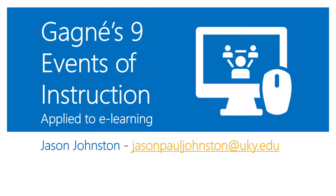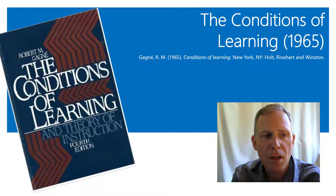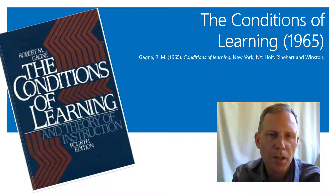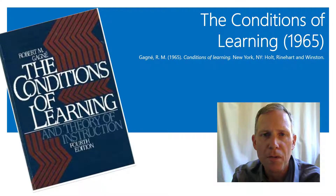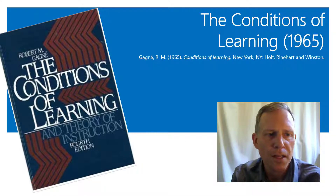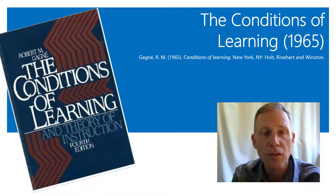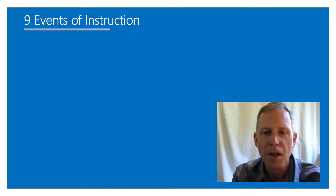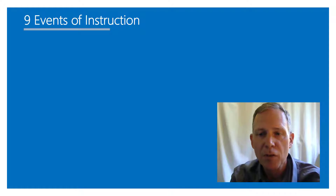I just wanted to talk for a few minutes about Gagné's nine events of instruction and how they apply to e-learning. This comes from a book called The Conditions of Learning and Theory of Instruction from 1965. Robert Gagné goes through a lot of different kinds of approaches to learning and how students learn and how they respond to stimulus. What kind of learning theory do you think Gagné used? If you said behaviorist, you were right — it was a focus on stimulus response, or outcomes of instruction.